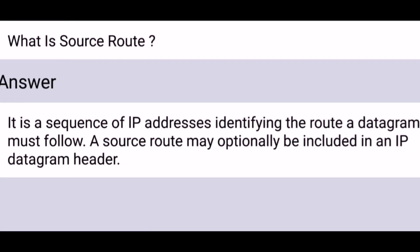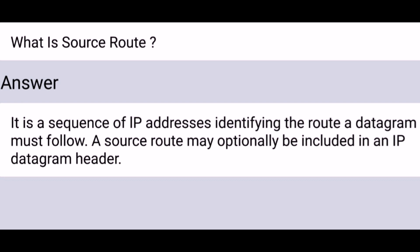What is a source route? It is a sequence of IP addresses identifying the route a datagram must follow. A source route may optionally be included in an IP datagram header.